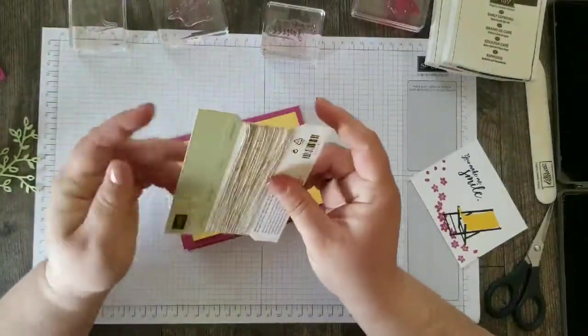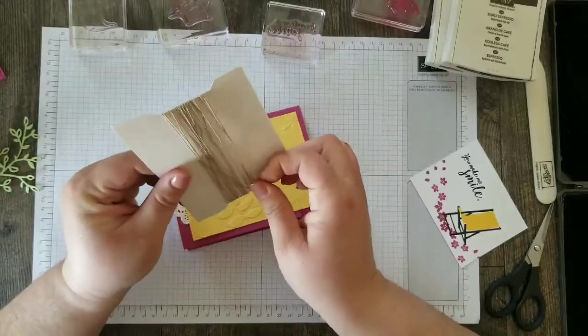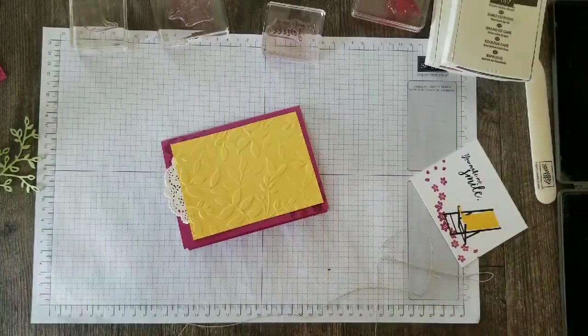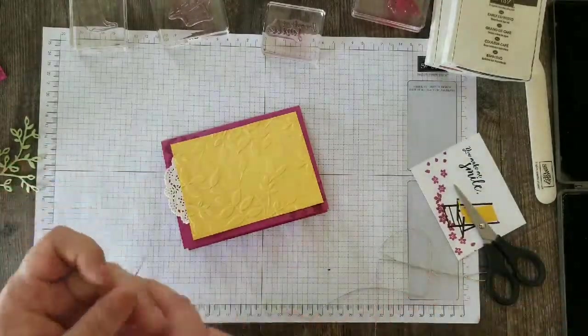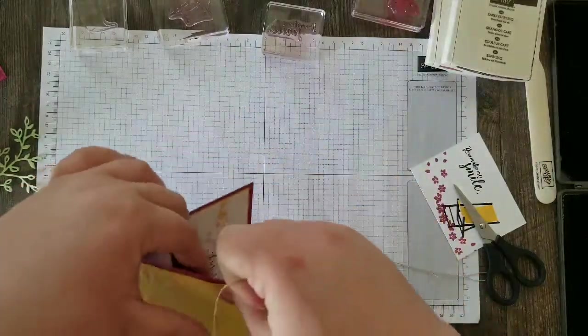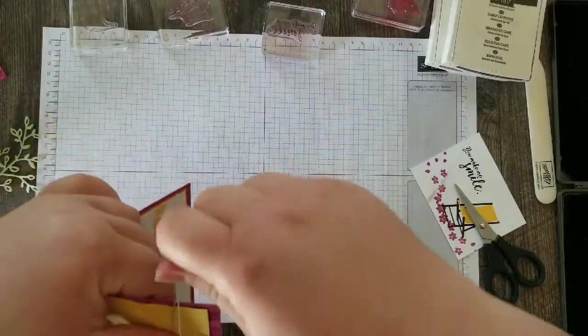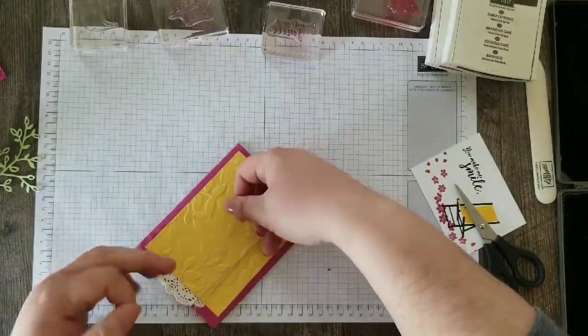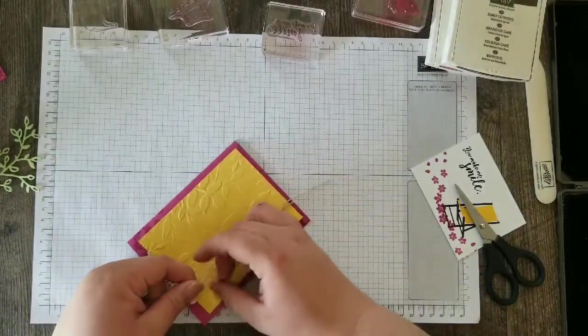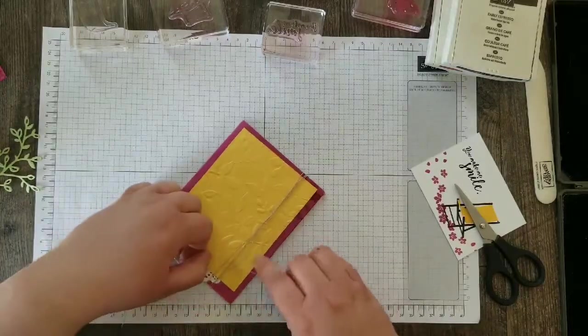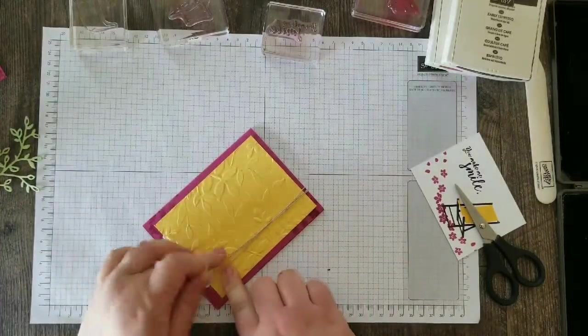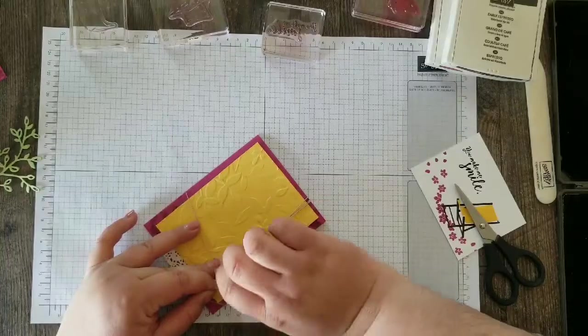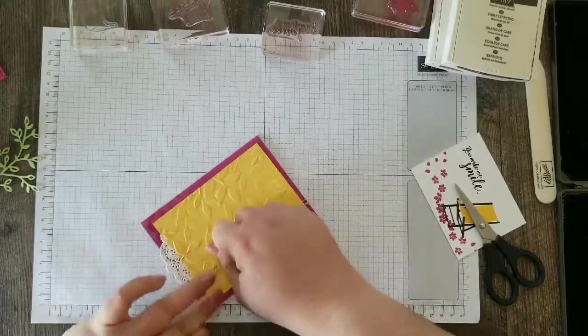Next I'm going to come in with my linen thread. Nice long piece here. We'll wrap this around our card base a few times and then tie it in a bow. And then we're just going to tie this just like you would tie your shoes. I like to tie it in a knot first so that it's a little bit easier for my bow to stay put when I tie that.